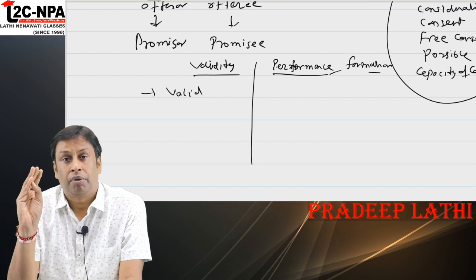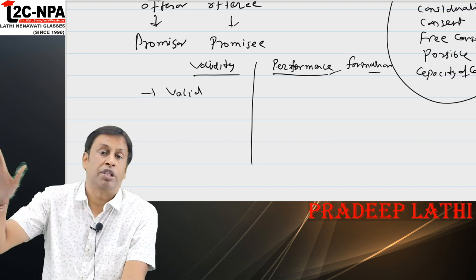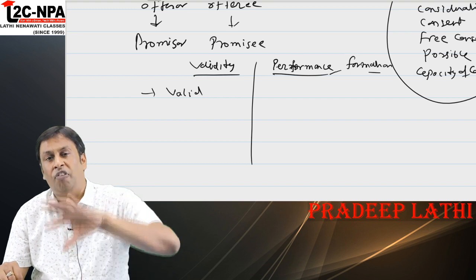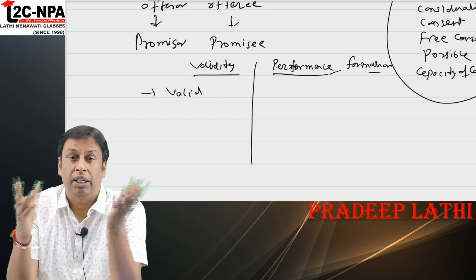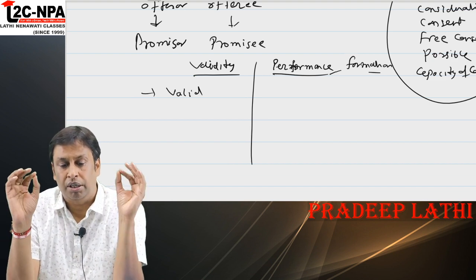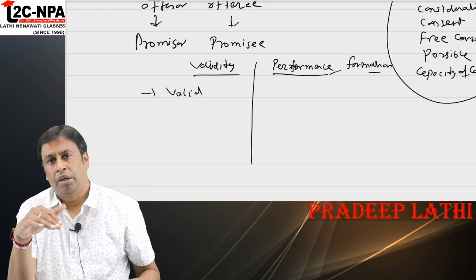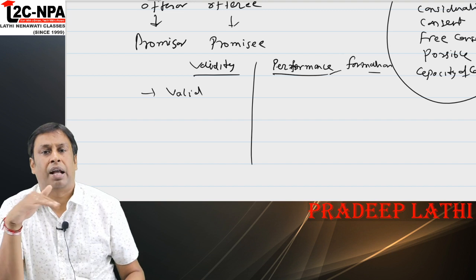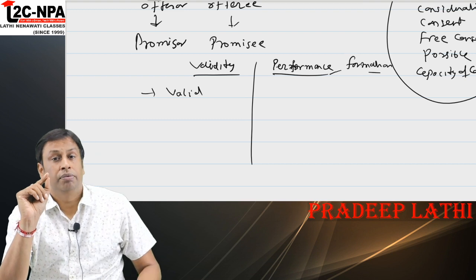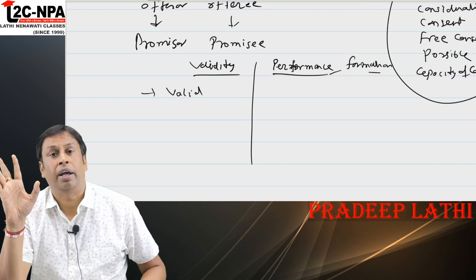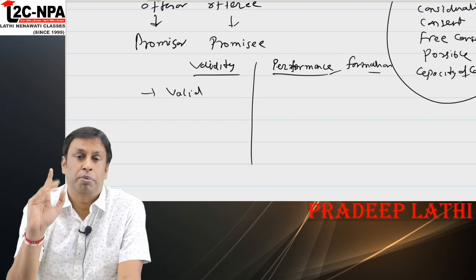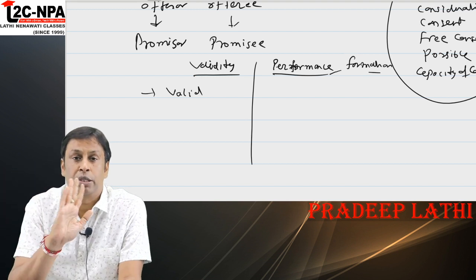Void contract: a contract which ceases to be enforceable by law. At the time of making the contract all factors of enforceability were present — legal relation, consent, consideration — everything was okay. But before execution of the contract, the subject matter was finished. That is a void contract.